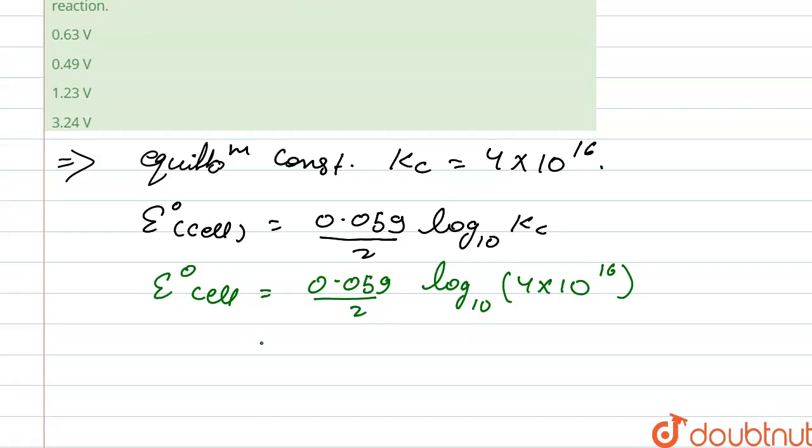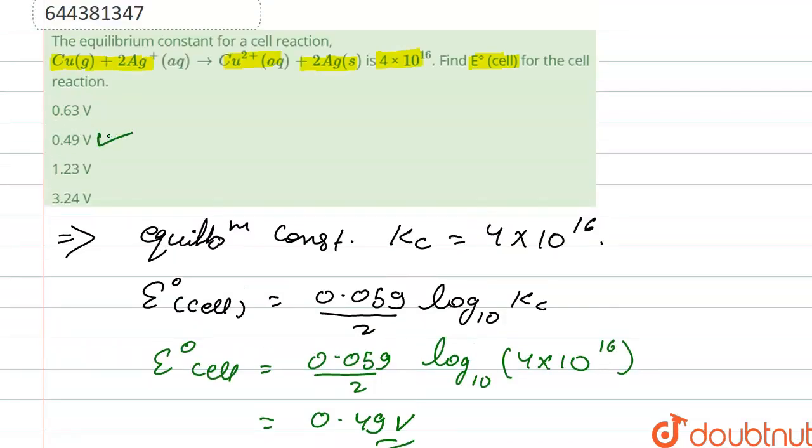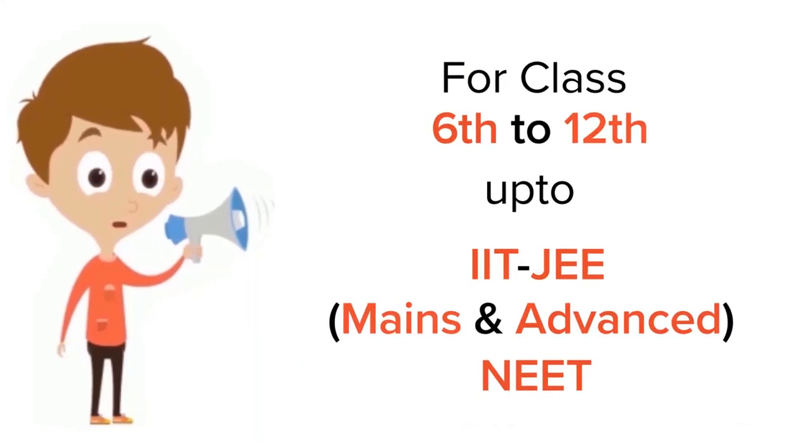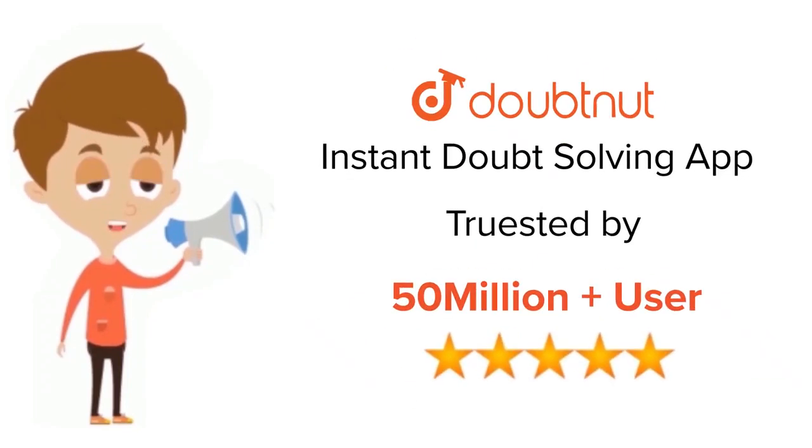So after solving this we get 0.49 volt. The value of E naught cell is 0.49, so our correct option is option 2. Thank you. For class 6 to 12, IIT-JEE and NEET level, trusted by more than 5 crore students...